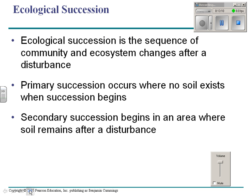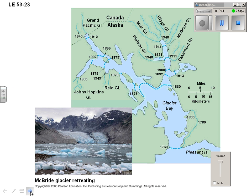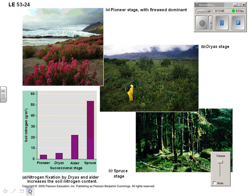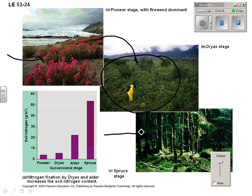That is the concept of succession. Primary succession is where there was no soil before — for example, an island pops out of the ocean after a volcano. Secondary succession is what we just saw in the forest fire — there was a disturbance and now things are growing back. You can see succession happening in farmer's fields, and glaciers retreat to give us succession too. Here's a succession over time in one ecosystem, starting with a pioneer stage with fireweed, then a shrub stage, and finally ending with spruce trees.